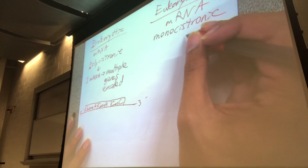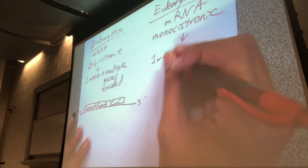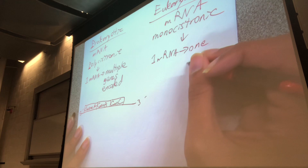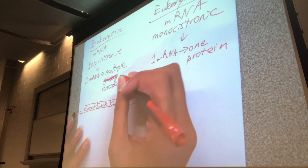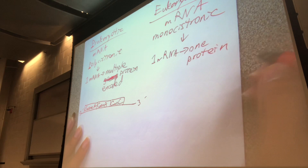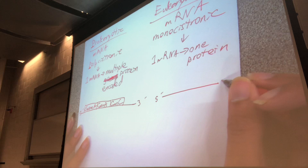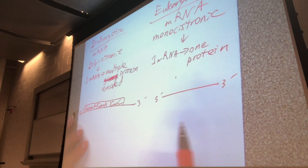Contrast that with monocistronic mRNA, which you see in eukaryotes — one mRNA only encodes for one protein. The reason eukaryotes have this difference is that in transcription of eukaryotic genes there's an intermediate type of mRNA called pre-mRNA.